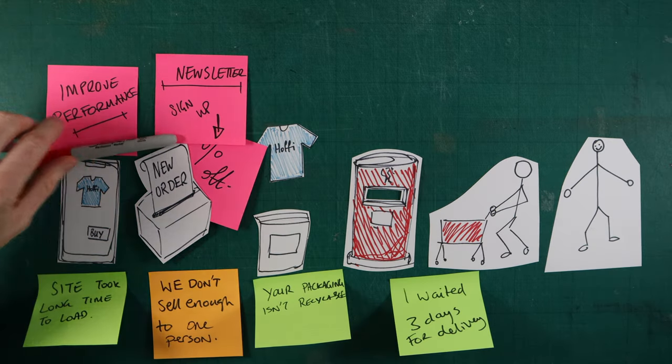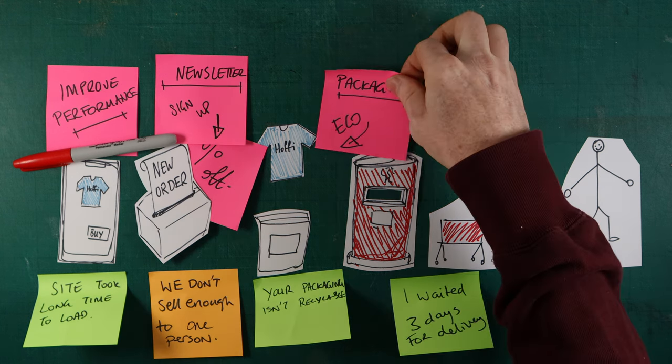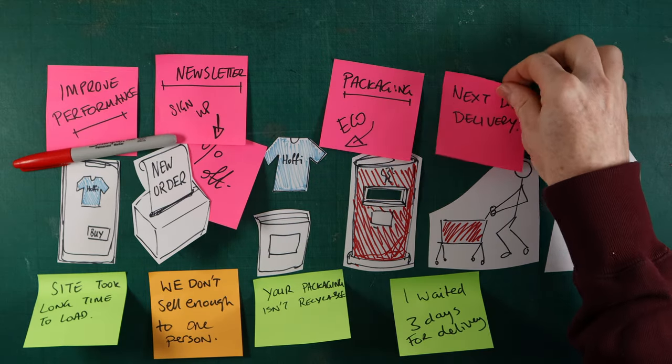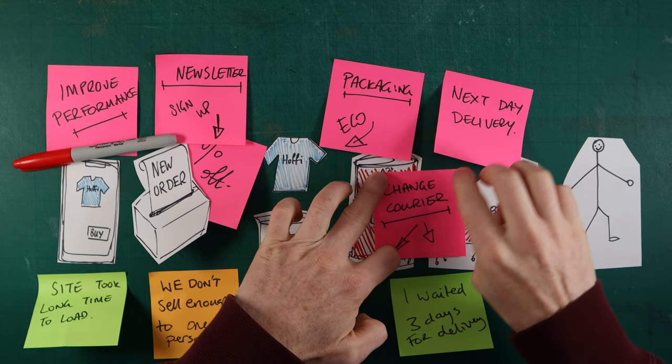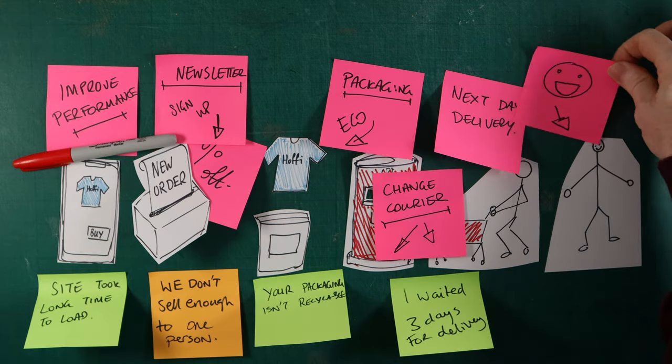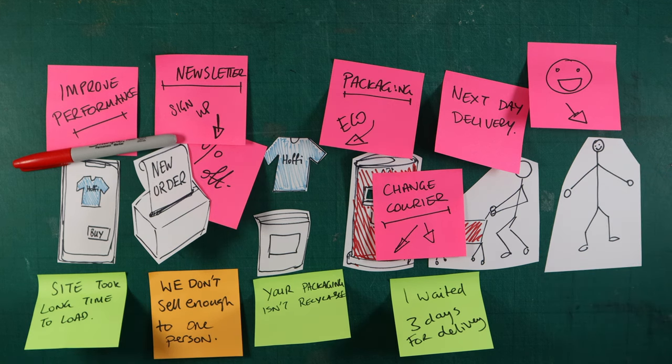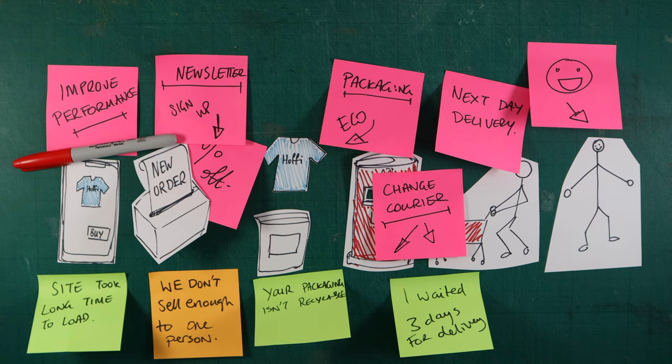The first and most obvious is ensuring the load times and performance of the website is improved. From the market research that was done, we could propose a discount code for those who sign up to the newsletter with the idea to improve retention and make people buy more products. The third change would be to look at the packaging and alter it to a more eco-friendly product. Finally, we can change the courier to one that provides delivery next day as an option. With these simple changes, we provide the user with a better service and experience.